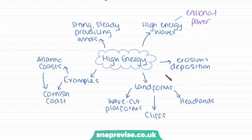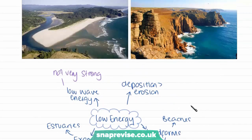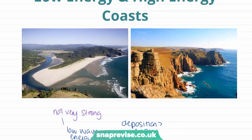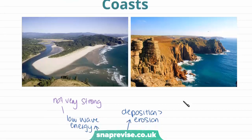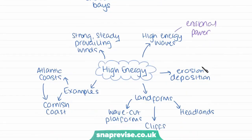At high energy coasts, the rate of erosion is greater than the rate of deposition. In this photograph we can see there are not many beaches where sediment is building up — it's merely these cliffs being eroded most of the time, with sediment being transported away by the waves. The landforms we associate with high energy coasts tend to be cliffs, wave platforms, and headlands.